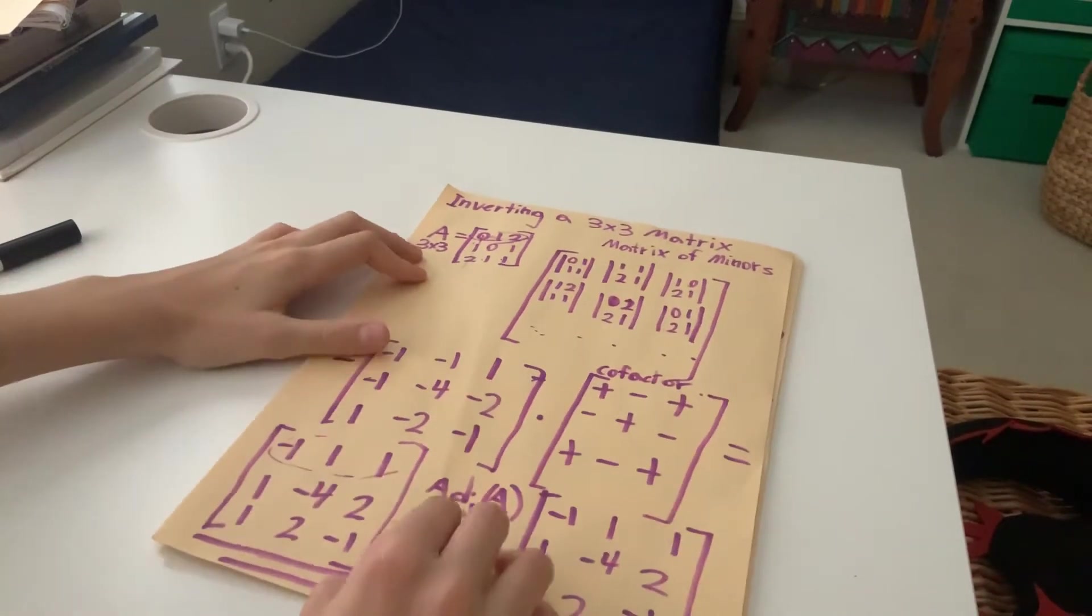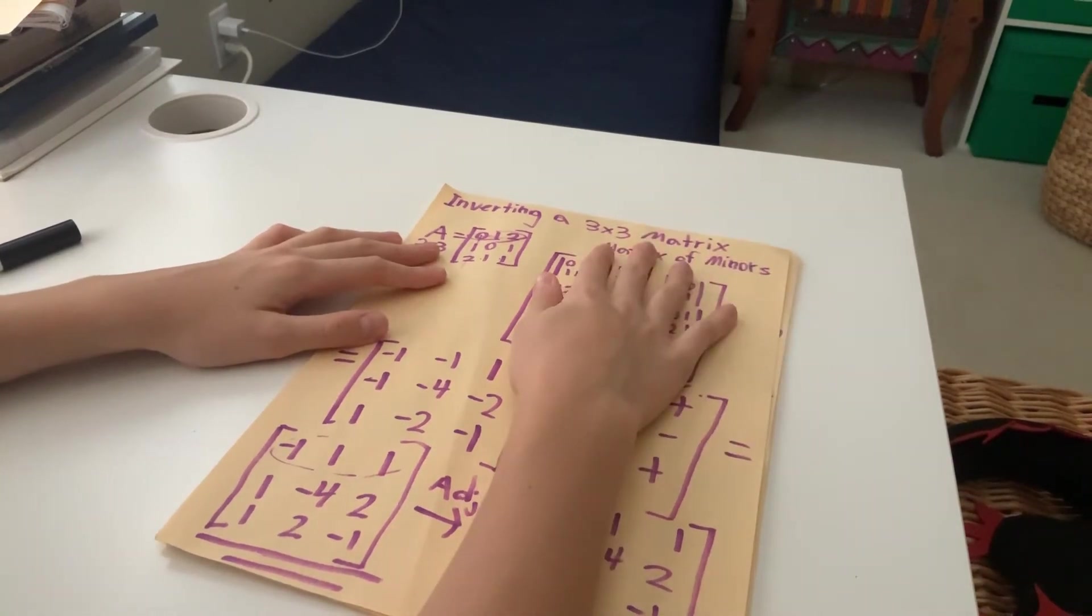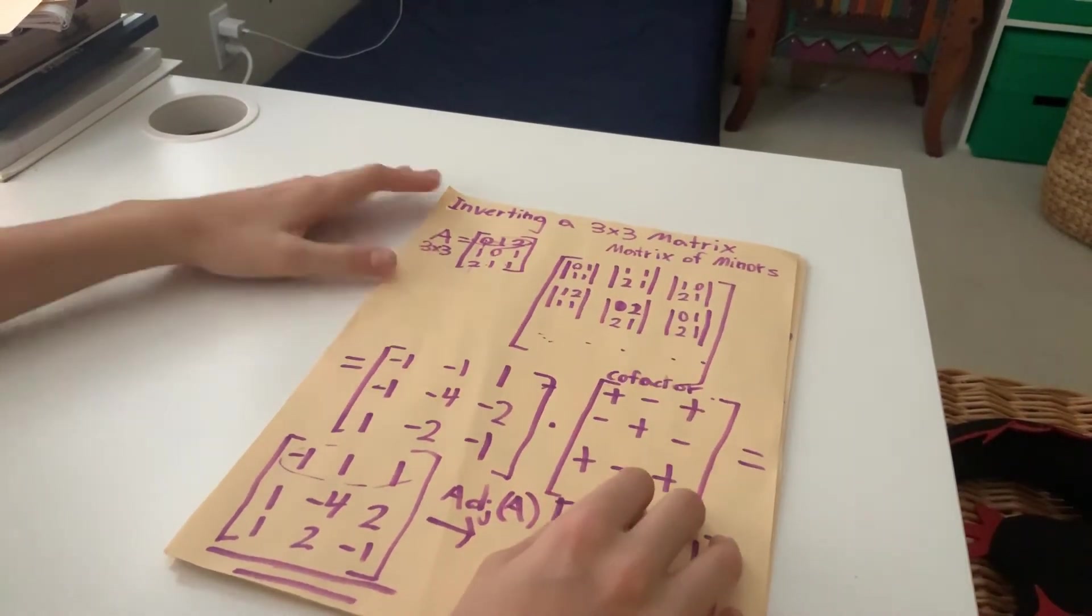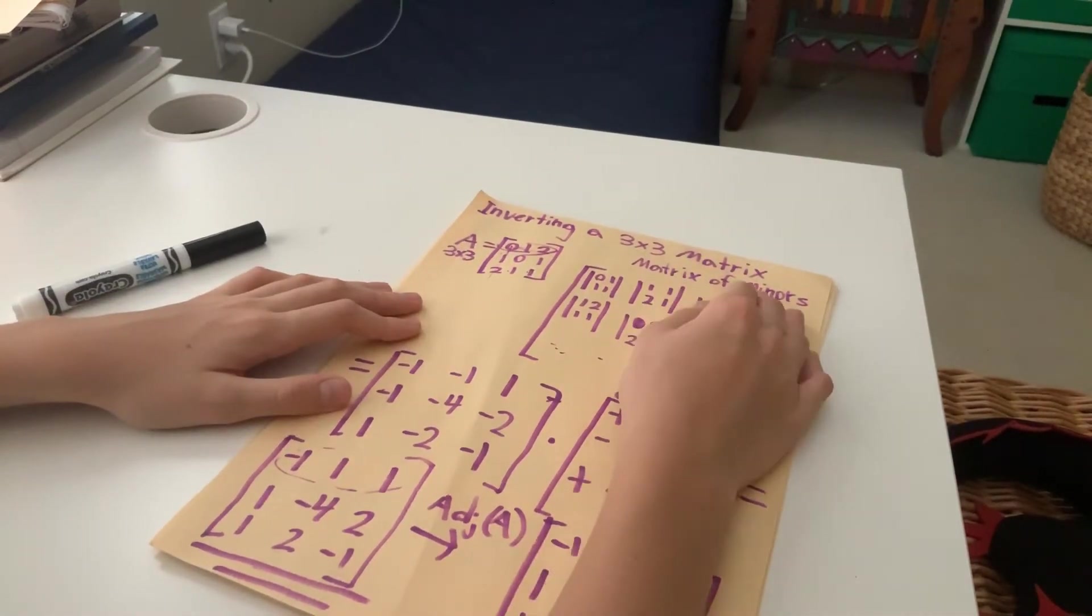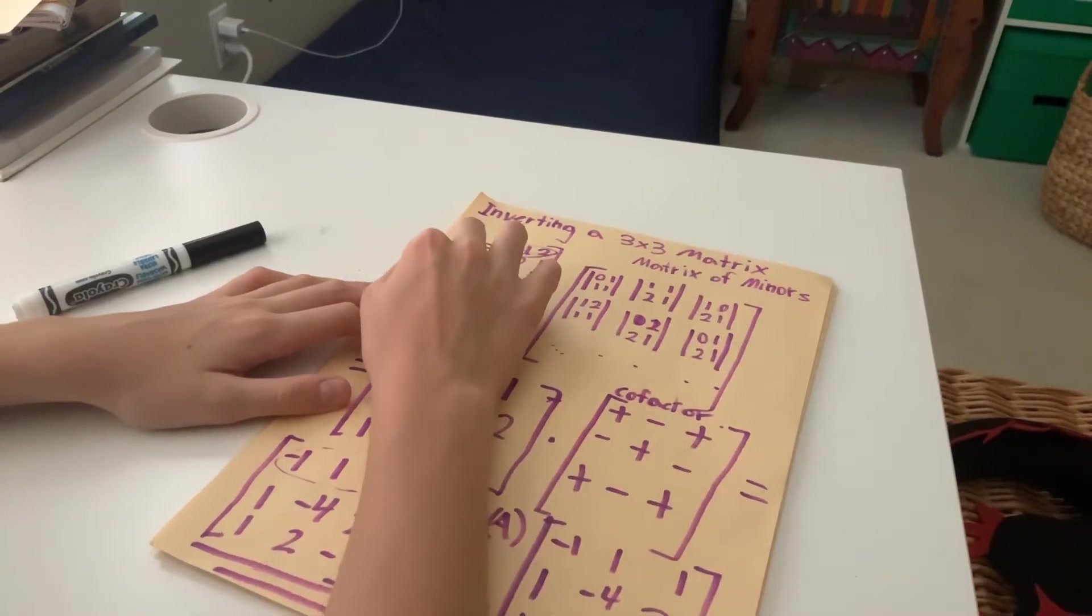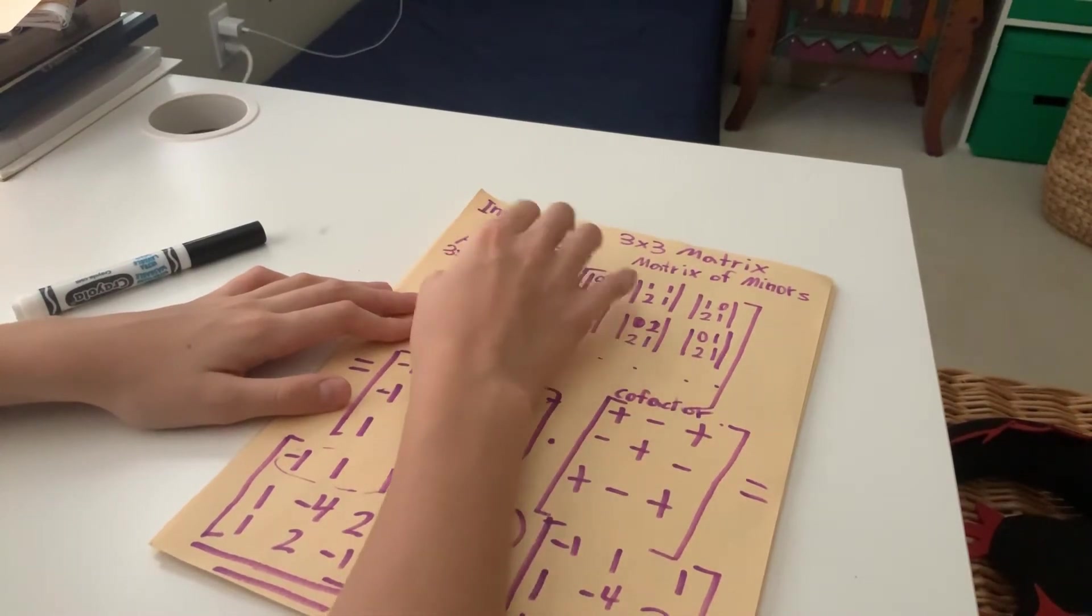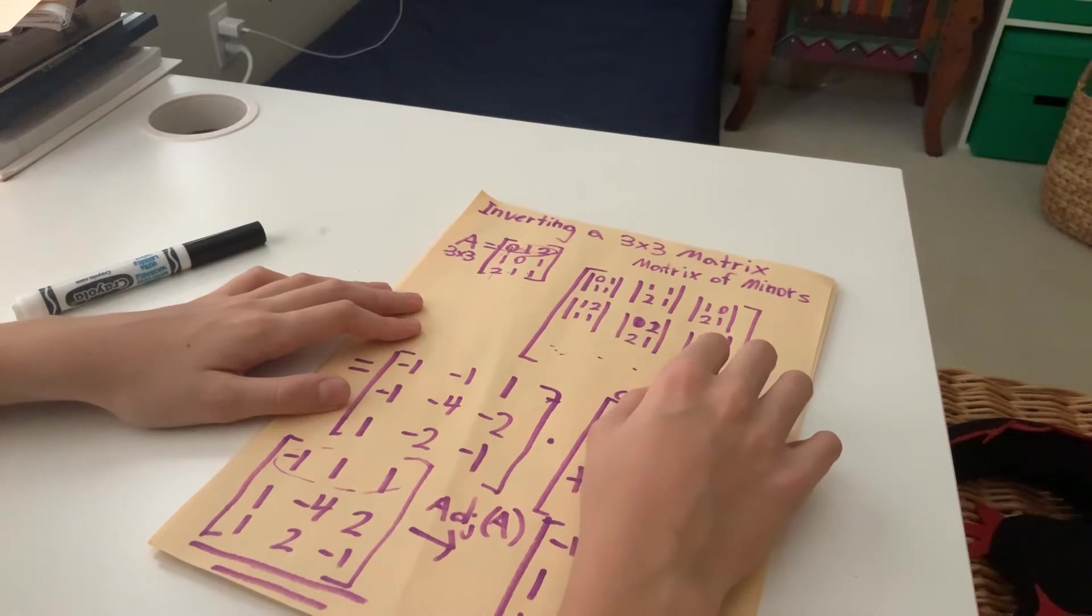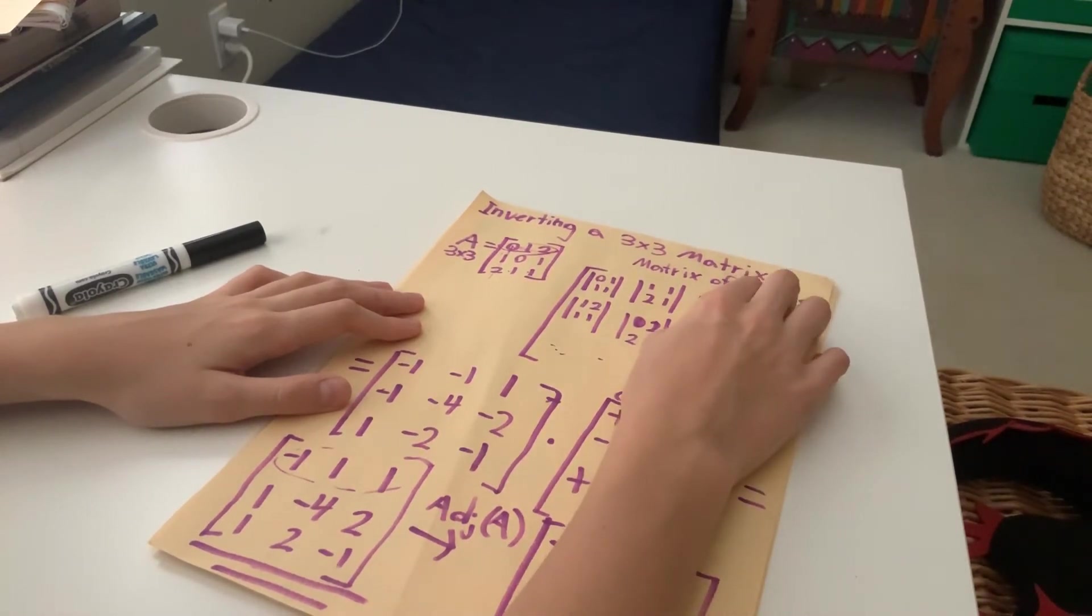So inverting a 3x3 matrix. Remember this? Got pretty confusing, didn't it? Anyway, basically, this process started off with, obviously, setting up a 3x3 matrix, A in this case. And the values here don't matter. I just picked values at random.